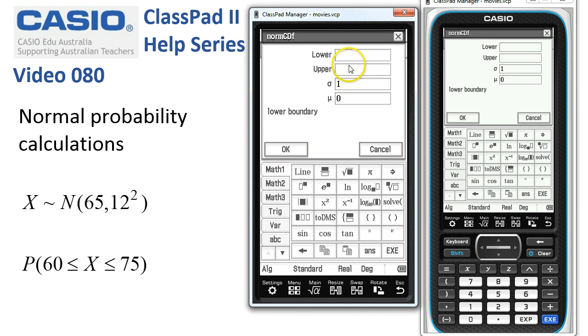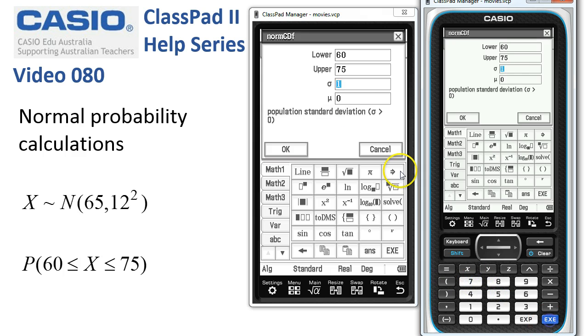So the first problem is what's the probability that X lies between 60 and 75. Now I enter 60 and then I'm going to tap execute which automatically jumps the cursor into the next box so you don't have to repeatedly be typing numbers and tapping back up here. So 75 is the upper value.